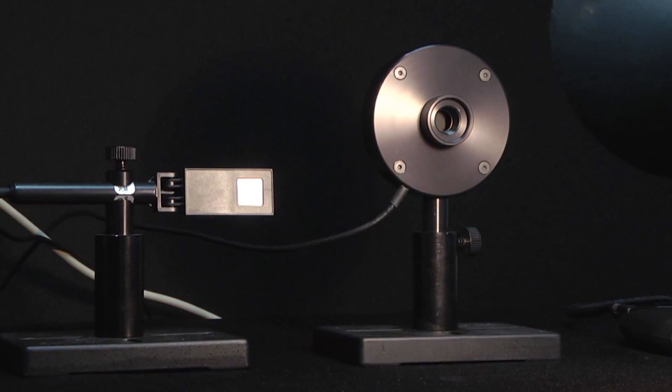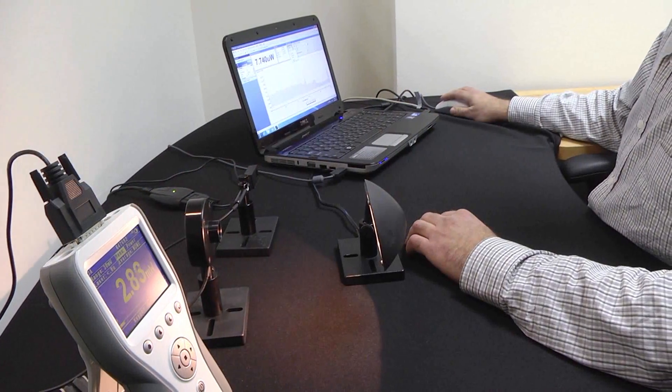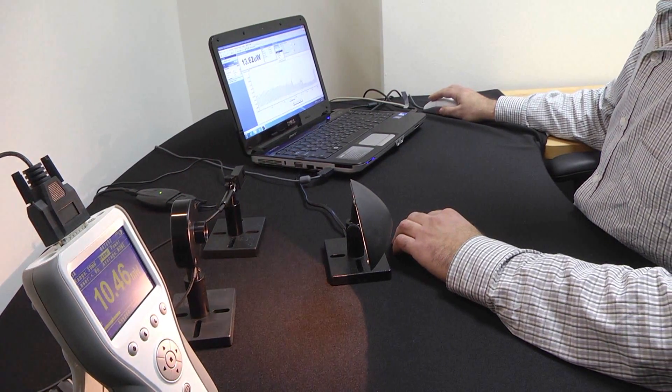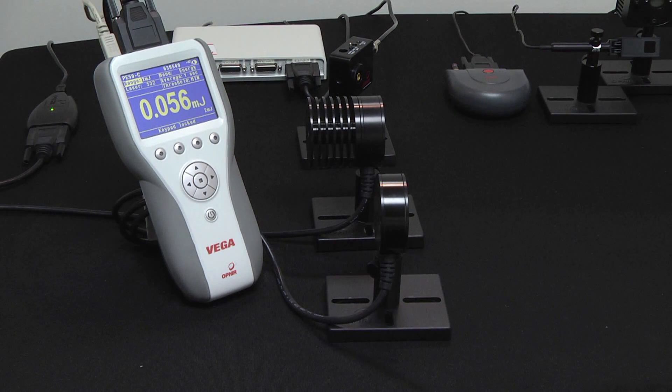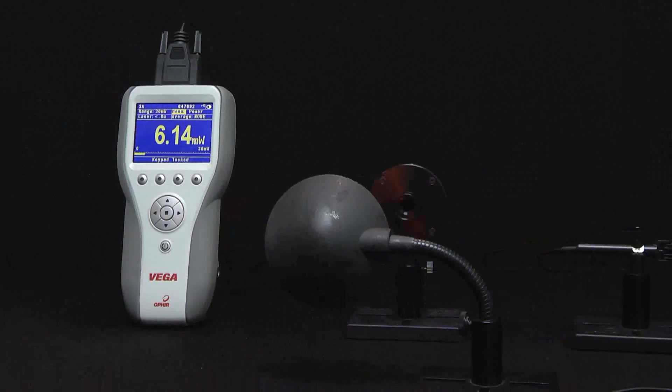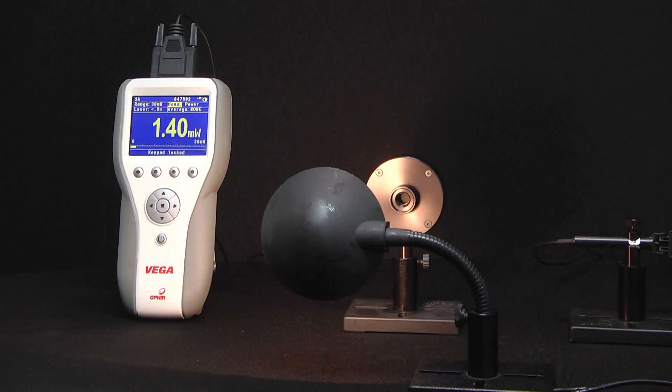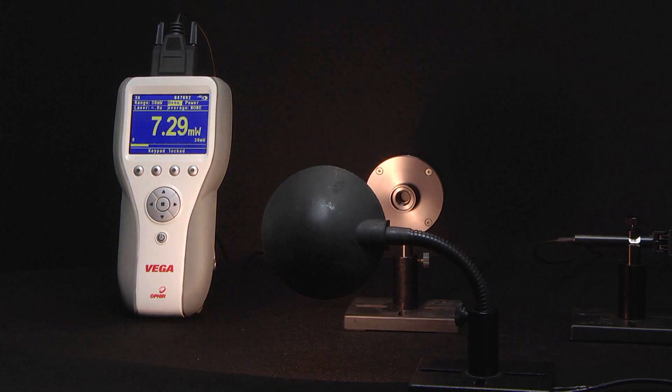Let's now demonstrate how Starlab turns your PC into a laser multi-channel measurement workstation. Starlab can take inputs from various kinds of sources at once. Here we have an Ophir 3A thermal sensor connected to a Vega meter, and the meter in turn connected via USB to our PC.